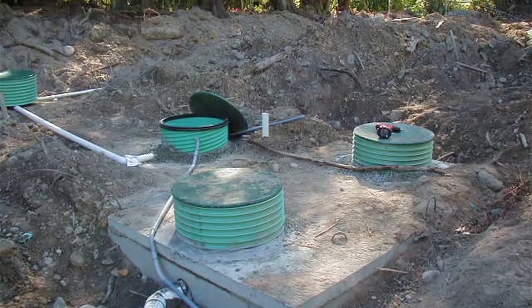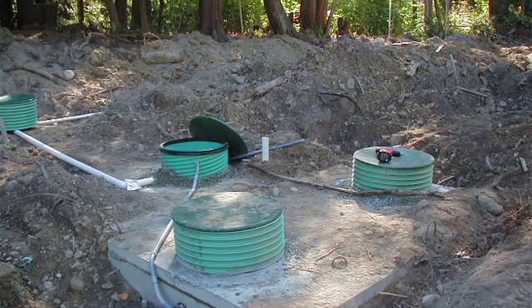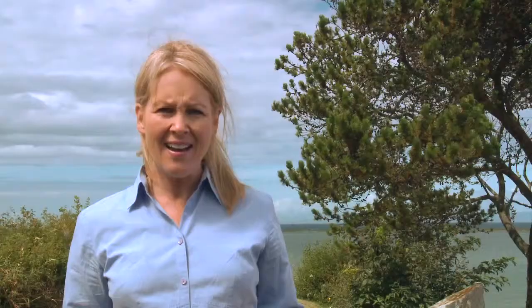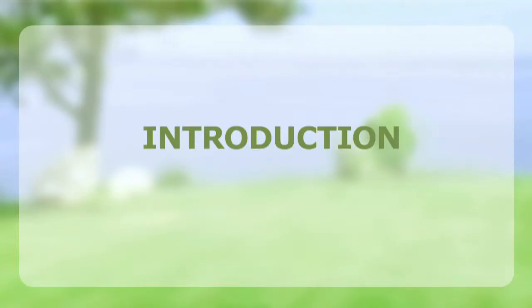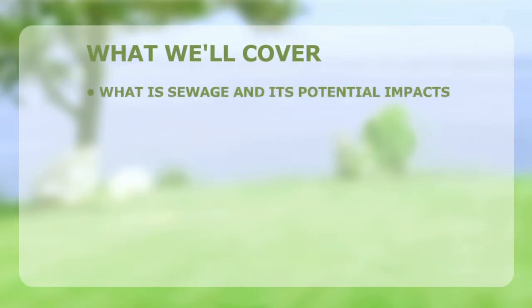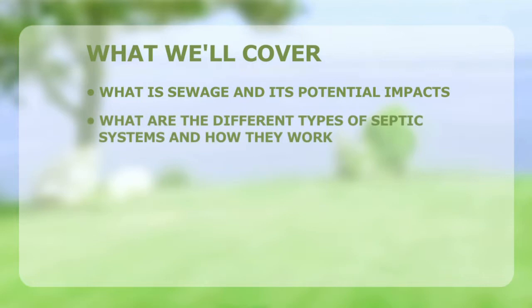In modern times, rules and regulations have been established on how to properly dispose of sewage. When not connected to a wastewater treatment facility or sewer, a home's best long-term option is a septic system. In this video we'll look at sewage and its potential impacts on health and the environment, and we'll explore the different types of septic systems and how they work.